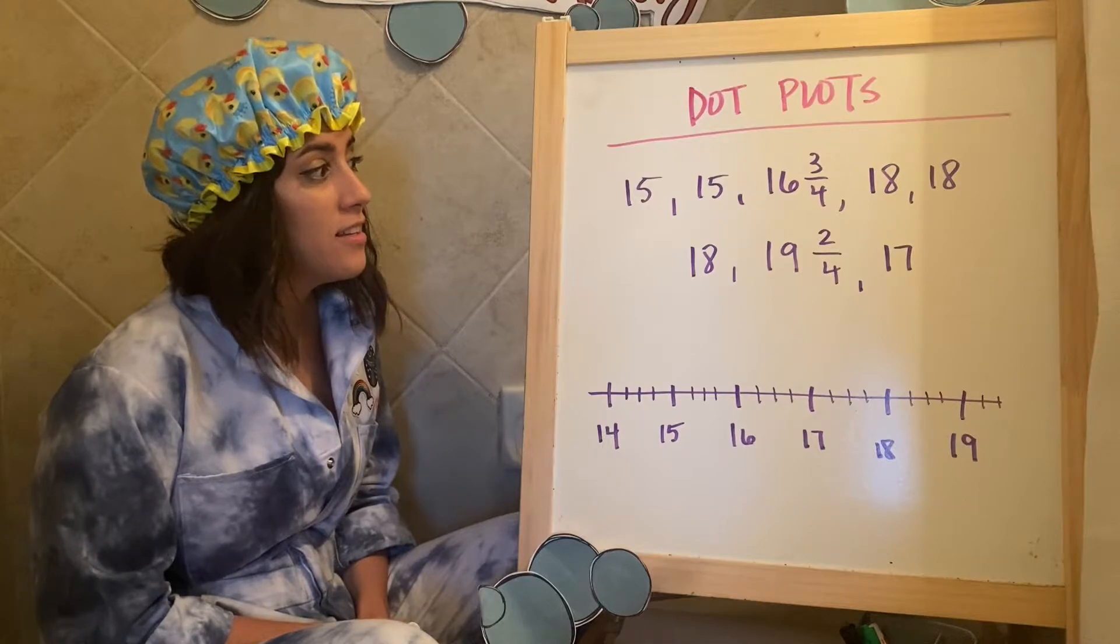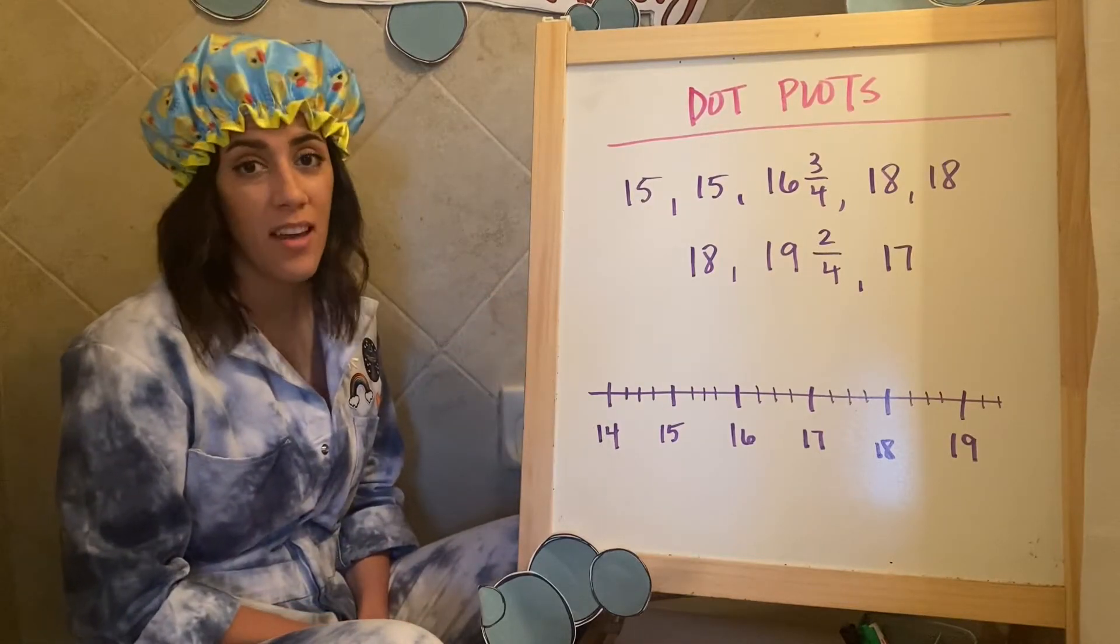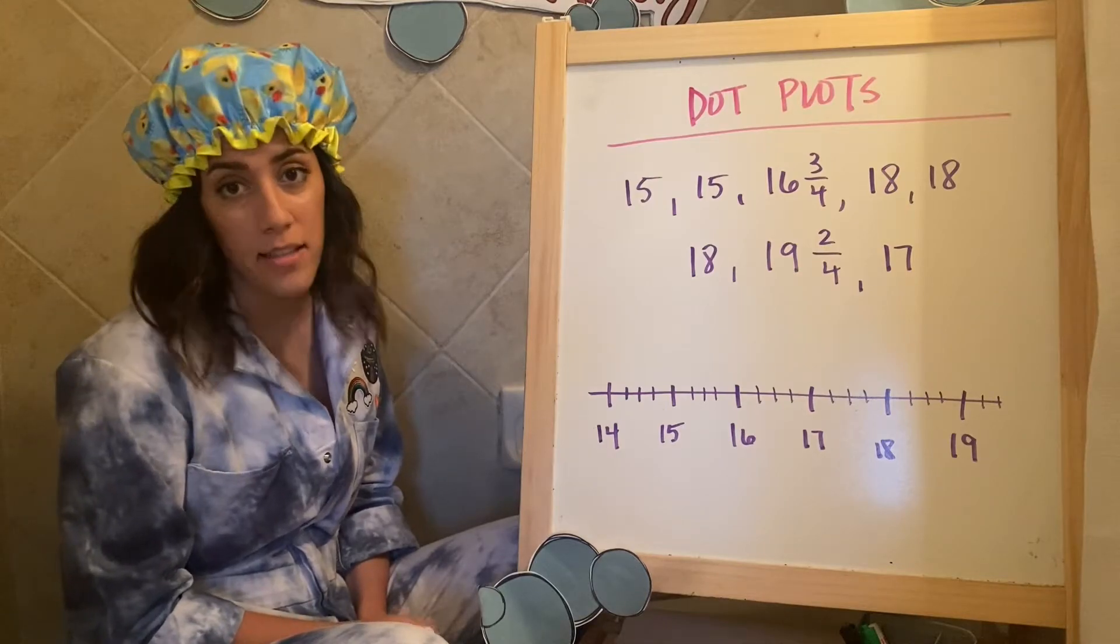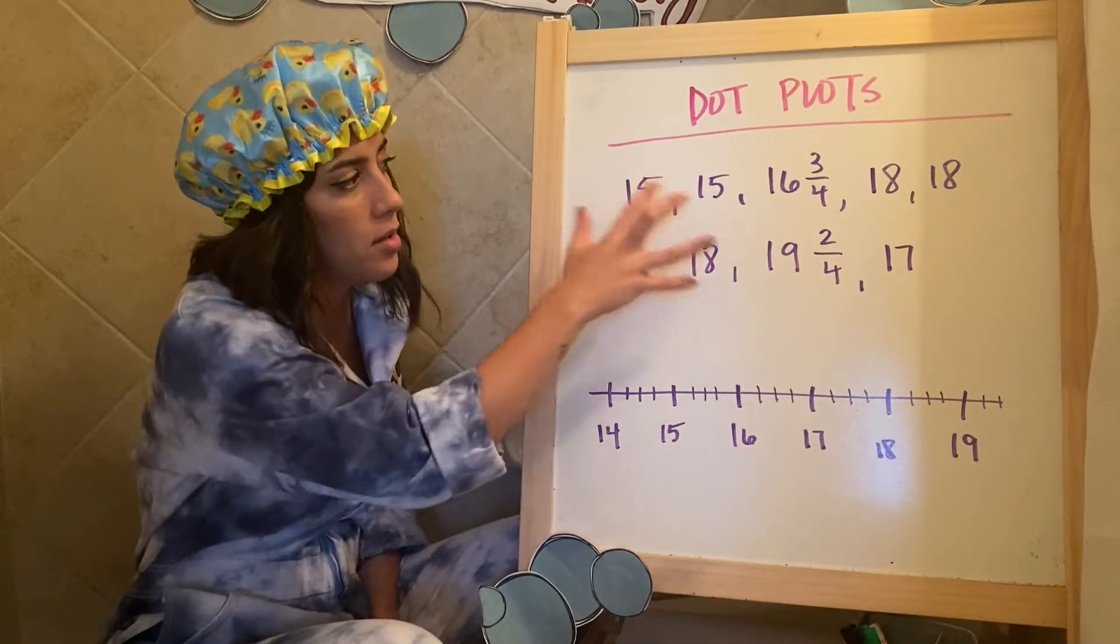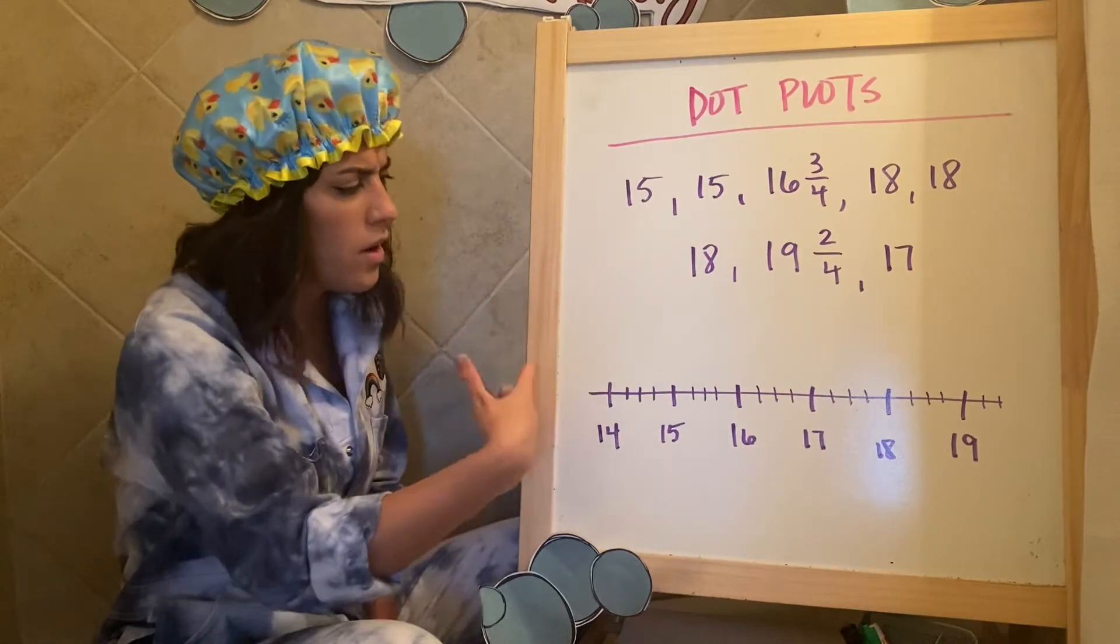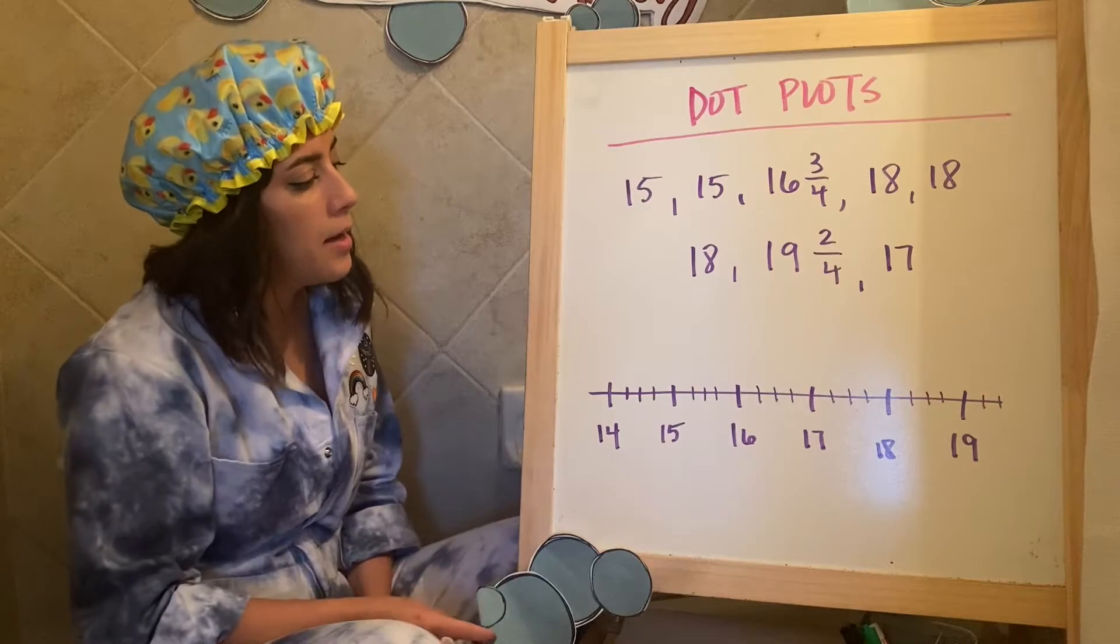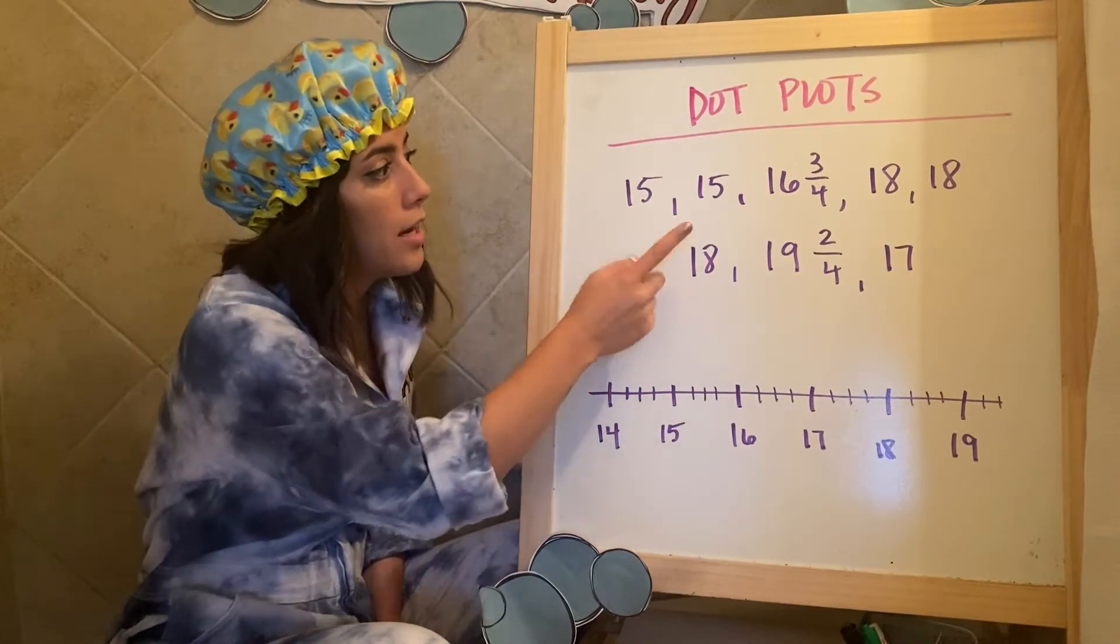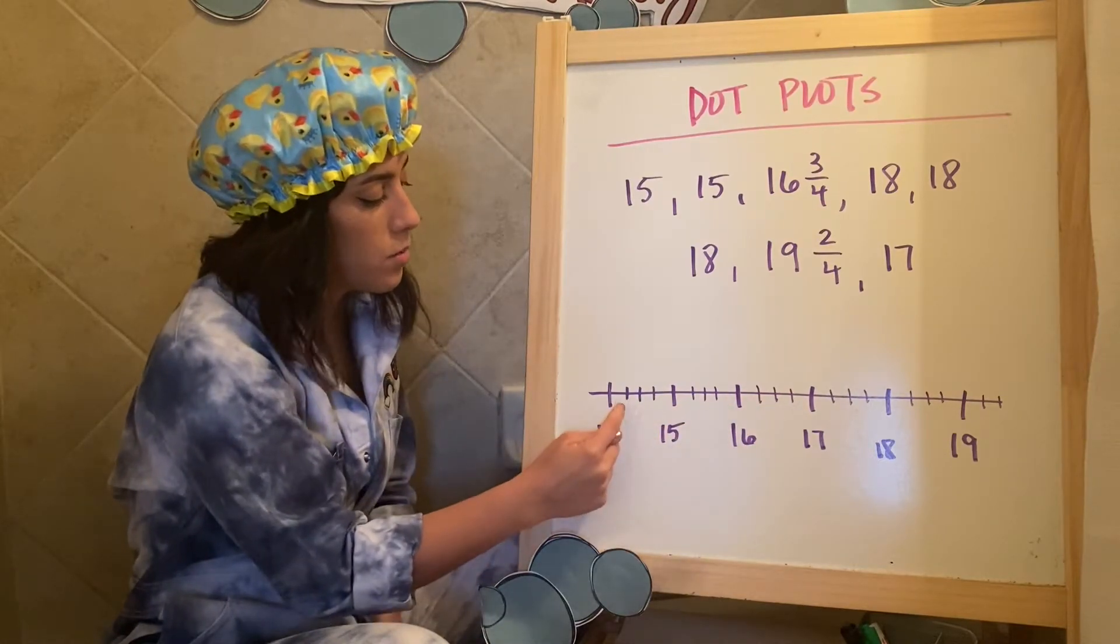Okay. Here is some data and they're asking us to put it into a dot plot. All I did was create a number line that had in within the range of these numbers. So I saw 15, I saw 19. So I kind of stuck within that. And then I also saw fractions, which is interesting. So out of fourths. So I just assumed every piece was out of fourth, which it is. So one, two, three, four, one, two, three, four.